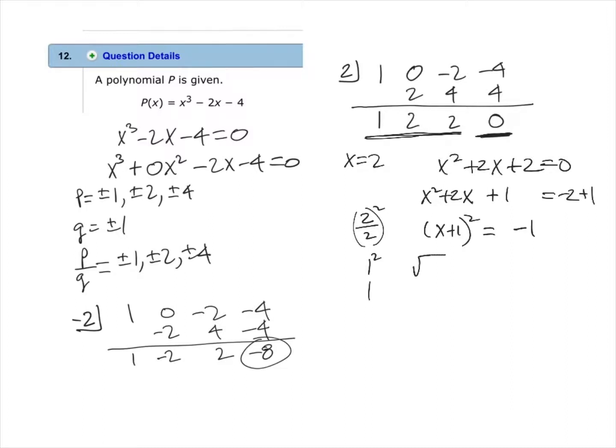Now we can use the square root property and take the square root of both sides and we have to remember to apply the plus or minus on the right. Now we have x plus 1 equals plus or minus and the square root of negative 1 is just i. Now we will subtract 1 from both sides and we have x equals minus 1 plus or minus i.